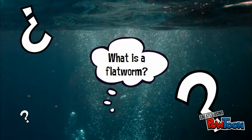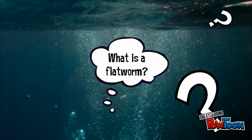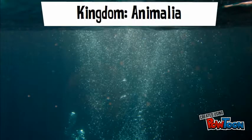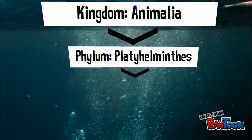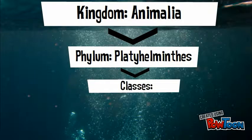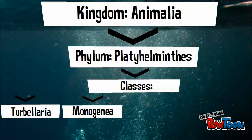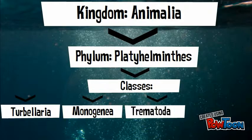What is a flatworm? A flatworm is a living organism that falls under the kingdom Animalia, the phylum platyhelminthes, and the classes Terbalaria, Monogonia, Trematota, and Sestoidea.